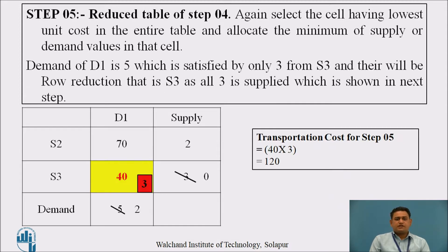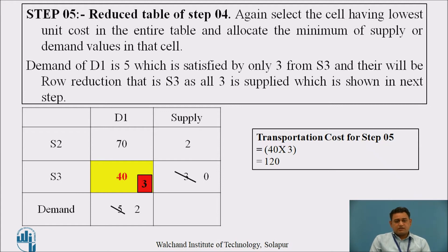This is the reduced table of step 4. Again, select the lowest unit cost in the entire table. The lowest cost is 40, lying at destination D1 and source S3. The demand of D1 is 5 and S3 availability is 3, so D1 is partially satisfied by 3 units, leaving a remaining demand of 2. As S3 is exhausted, there is a row reduction of S3, seen in the next step.